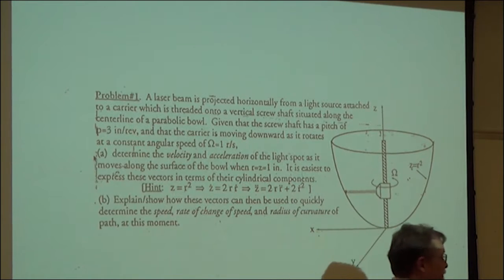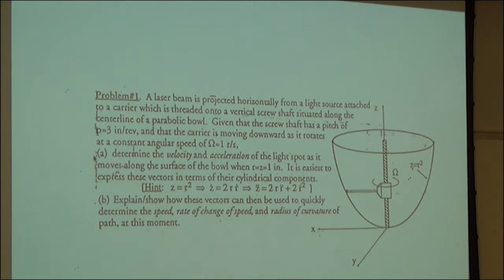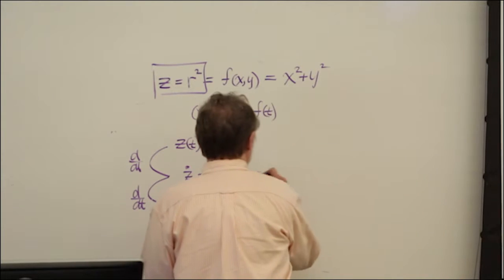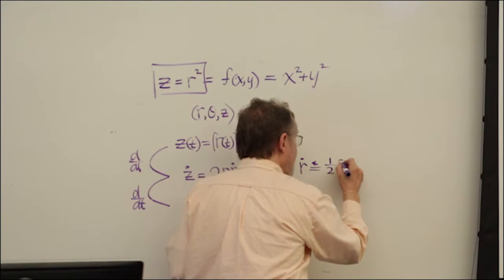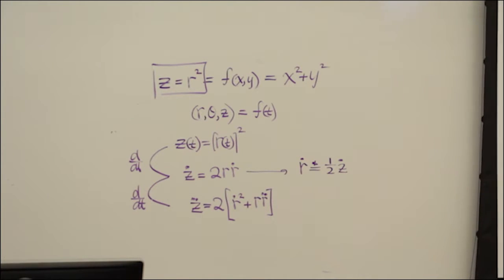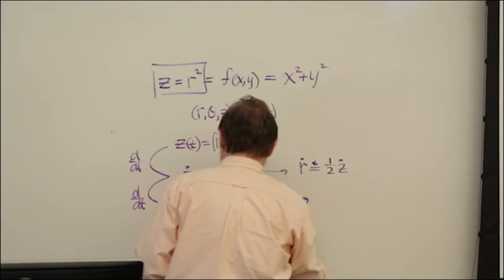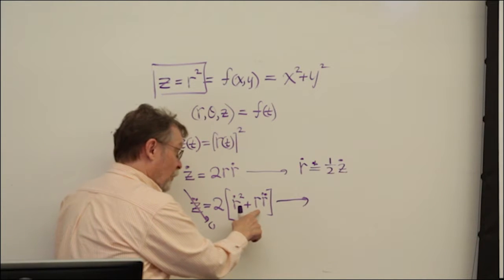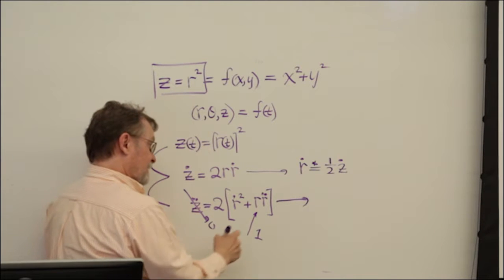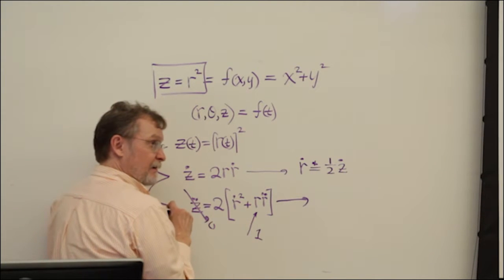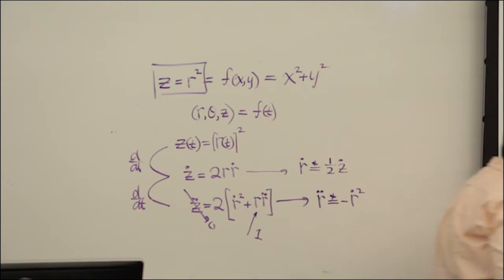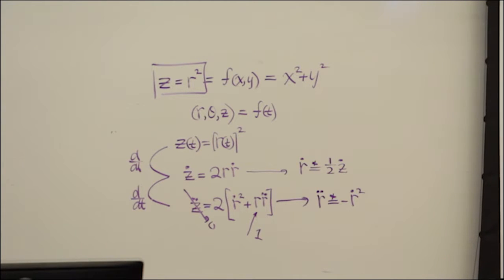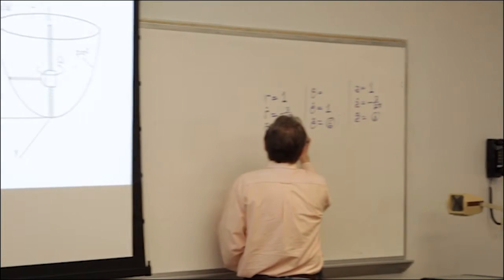From the first constraint equation at r equals 1, r-dot equals z-dot over 2, which is minus 3 over 4π. From the second constraint with z-double-dot equals 0 and r equals 1, r-double-dot equals minus r-dot squared, which equals minus 9 over 16π squared. Our information matrix is now full.